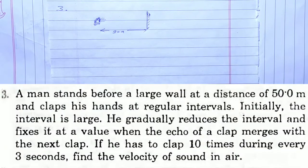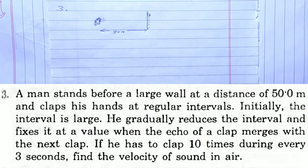Vama Solution Chapter 16 Sound Wave Question No. 3: A man stands before a large wall at a distance of 50 meters and claps his hands at regular intervals.